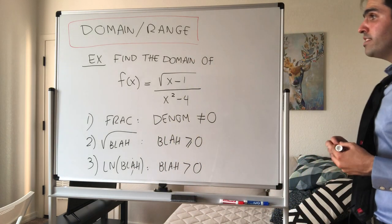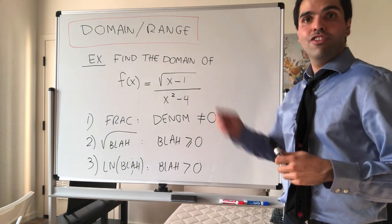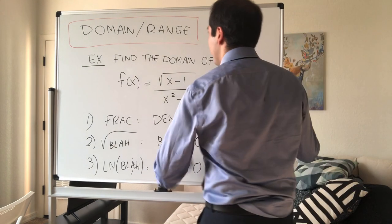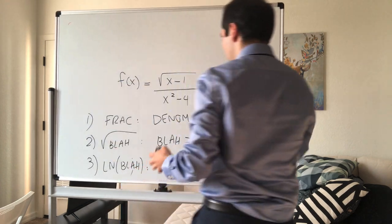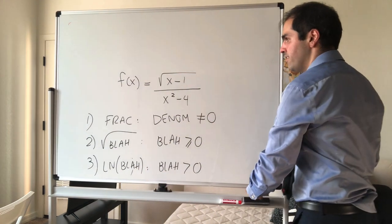All right, so let's see how we can apply that for this function at hand. Two things. First of all, notice, indeed, this is a fraction, this over this. So you need to make sure the denominator is non-zero.